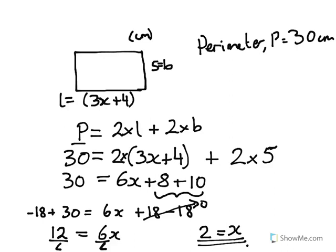What do we do? Well, the final thing we do here is we check that we've done everything right. If we've done everything right and x equals 2, then 3x is 3 times 2, which is 6. 6 plus 4 is 10. So the length would be 10 and the breadth would be 5.